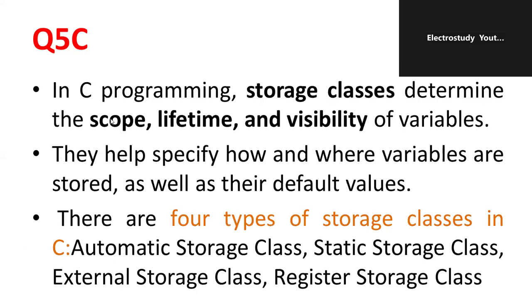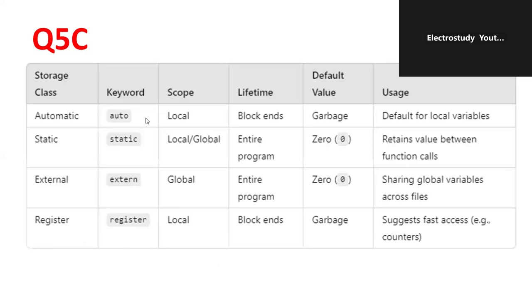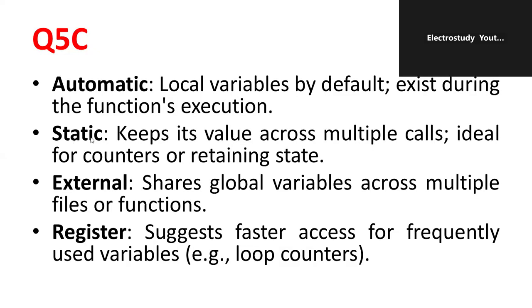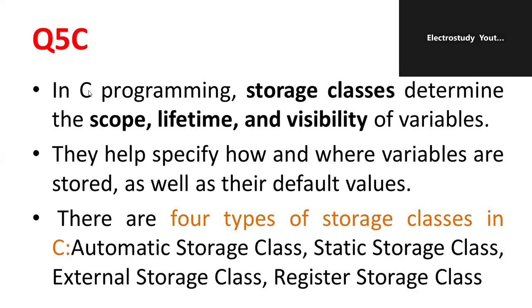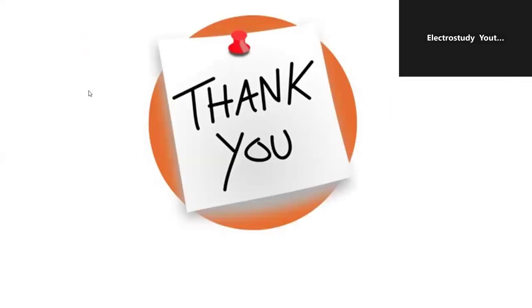The automatic storage class, the duty will be given. Static storage class, the duty is keep its value across the multiple calls. Ideal for counters and for retaining state. External will be like it shares the global variable across the multiple files or functions. And the register duty will be suggest the faster access for frequently used variables, especially loop counters. These are the major types of storage classes which is used in the C programming.